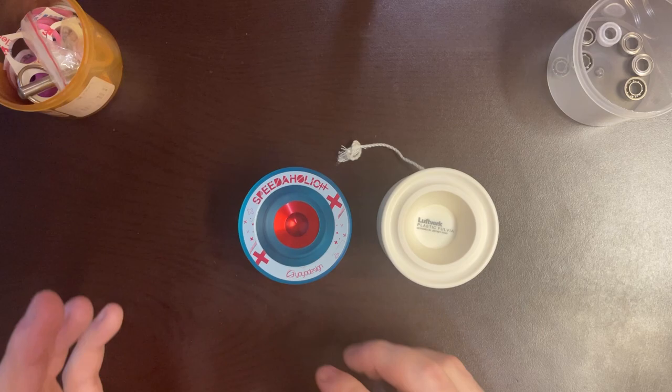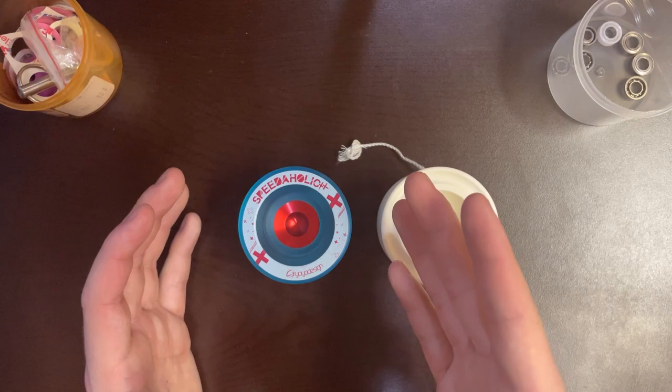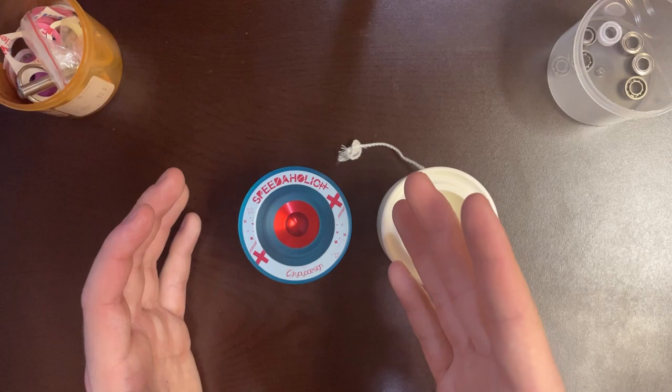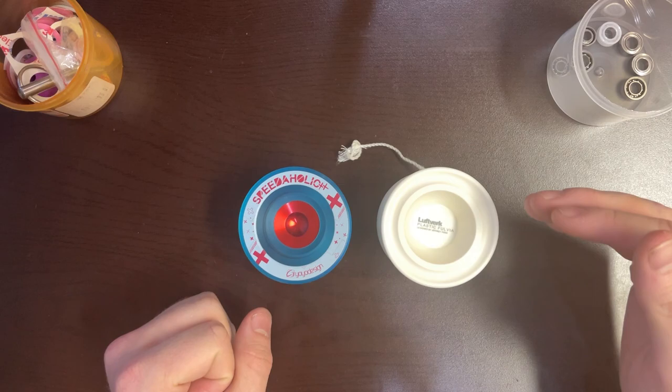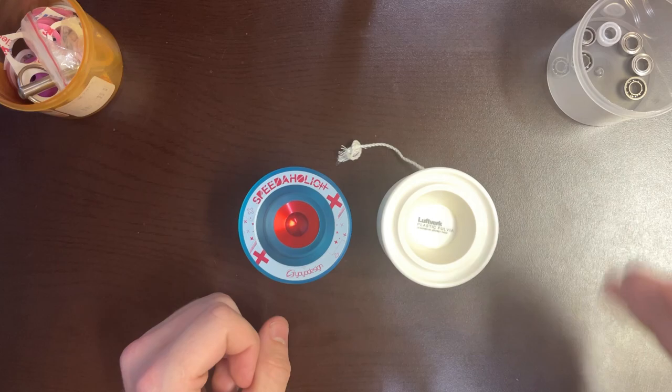The Speedaholic XX, with how unwieldy it is, in tandem with having slightly less stability, just makes it harder to do tricks with sometimes. This becomes apparent with horizontals. I just, full stop, prefer the plastic Fulvia for horizontals. It feels more natural. It handles them better. I feel like I don't have to be as accurate and aware of my horizontals with the plastic Fulvia compared to the Speedaholic XX.